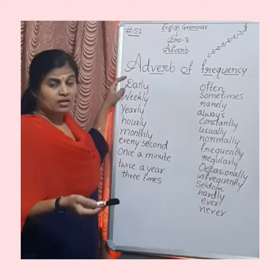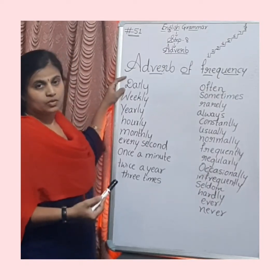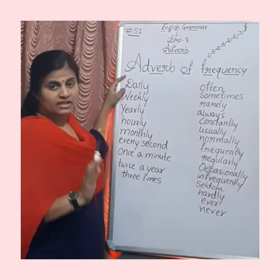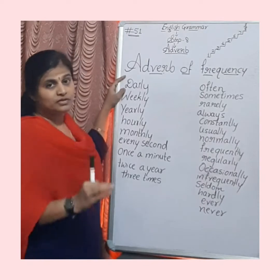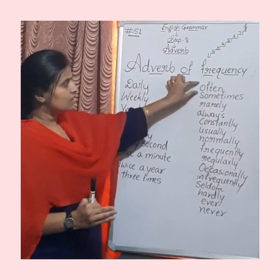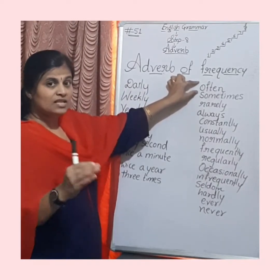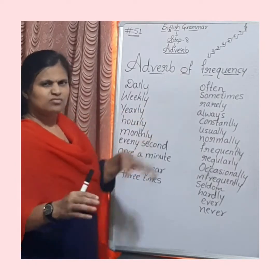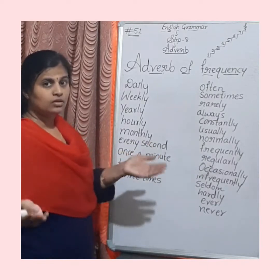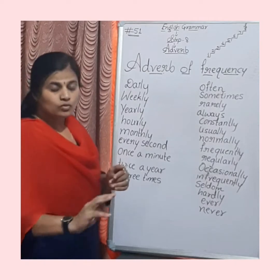For example, 'I do exercise daily.' So 'daily' is indicating exactly how often the action has been done. But here: 'I often do exercise.' So 'often' indicates not sure — the action is done, but not the exact date, day, or frequency.